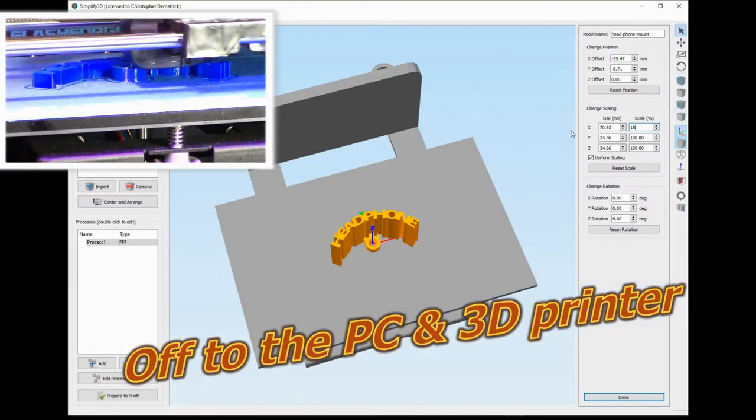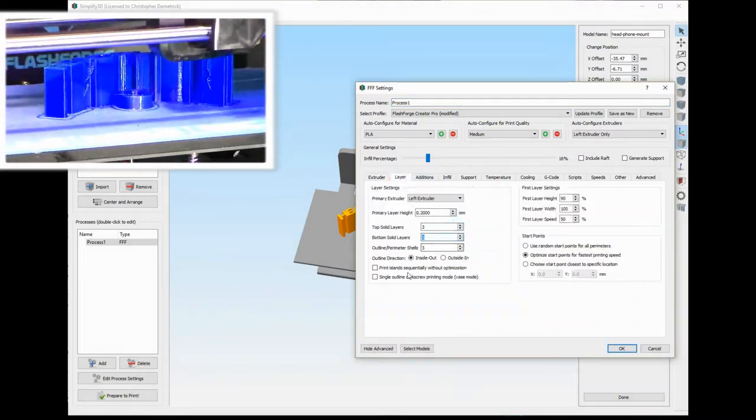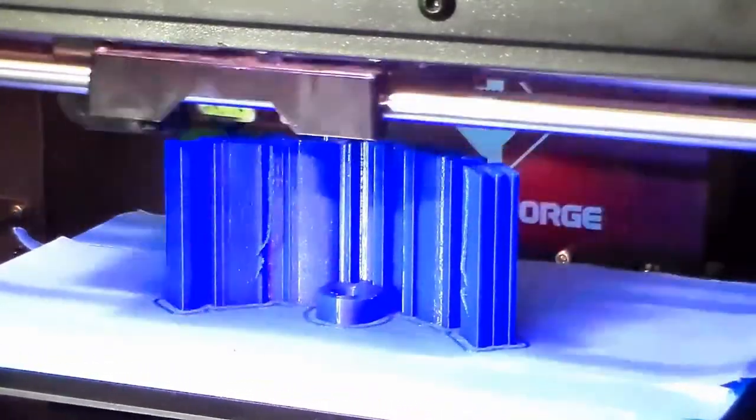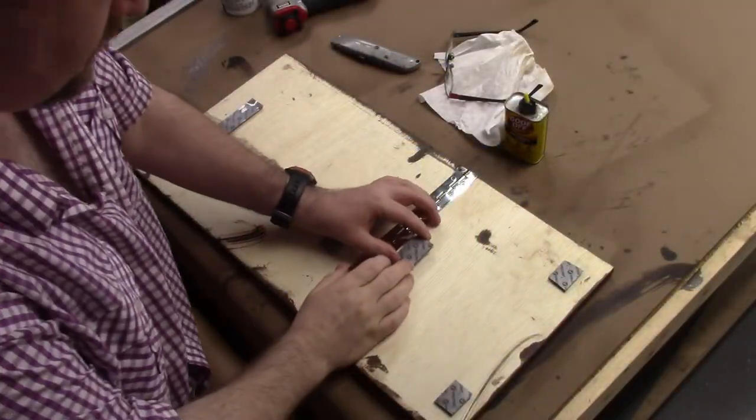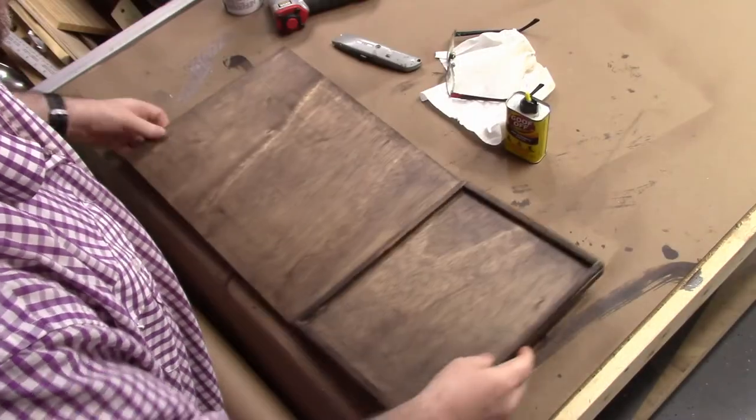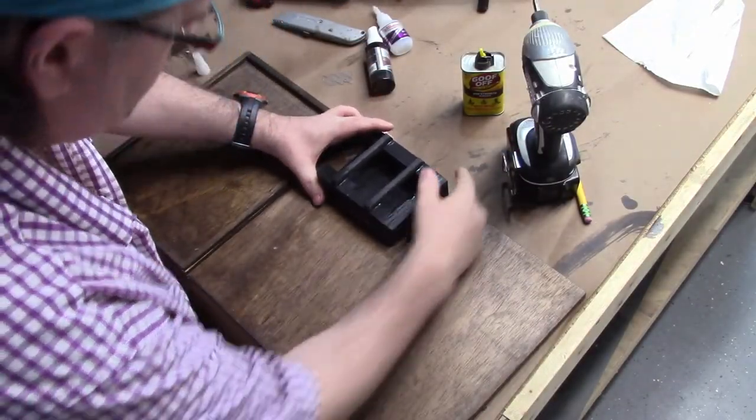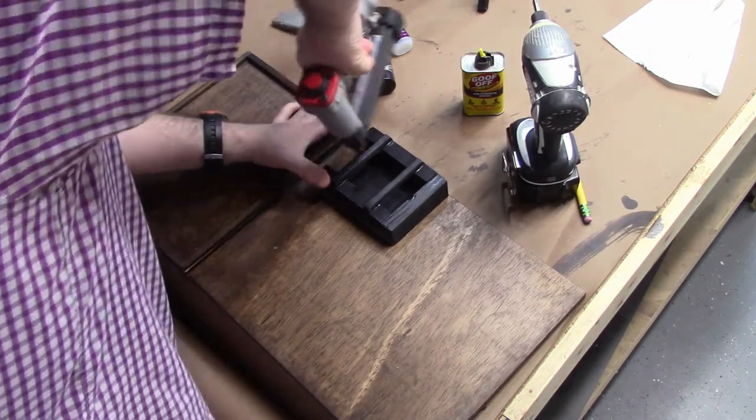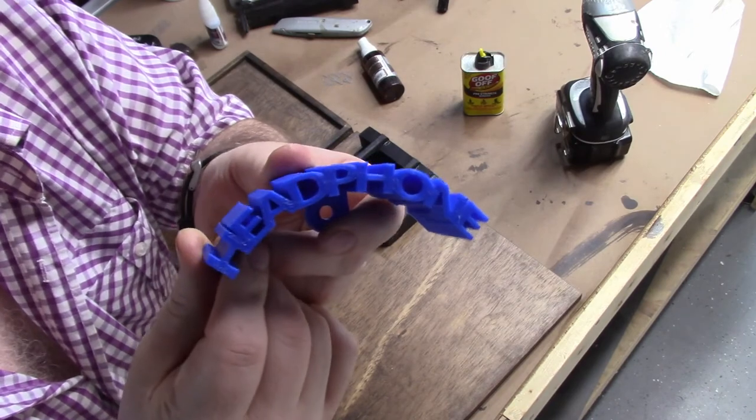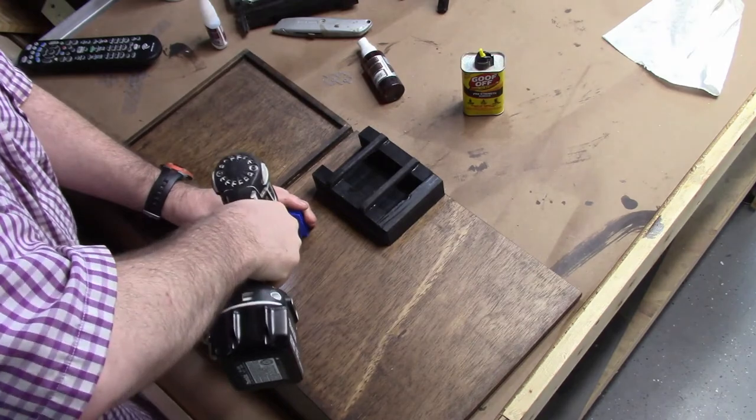Off to the PC and the 3D printer to print some headphone mounts. There's the time-lapse in the top left corner. And this is the back of the unit where I'm attaching the hook and loop Velcro, and then in the front I'm going to attach that holder for the remote control. I'm really liking these headphone mounts that I made, it came out pretty cool and I'll just go ahead and attach those right to the side of the front of this.